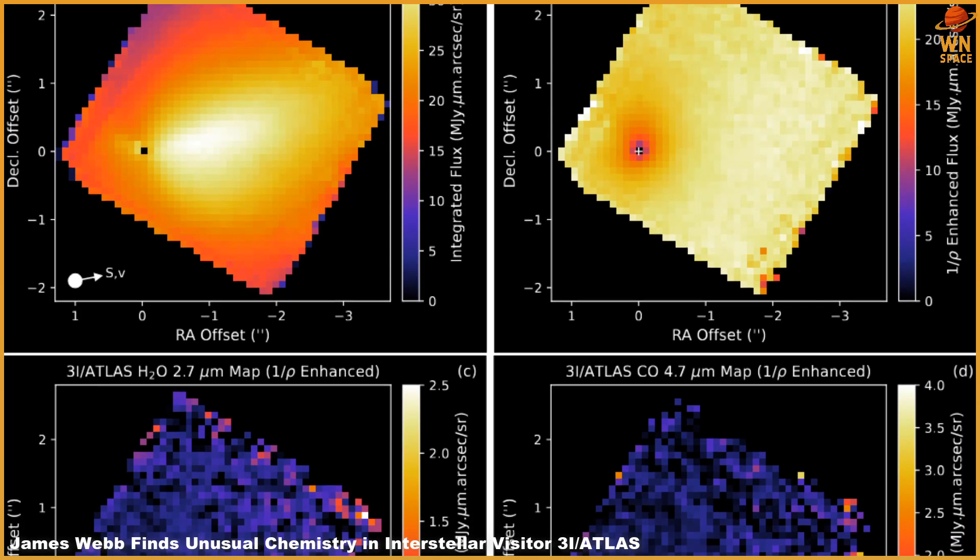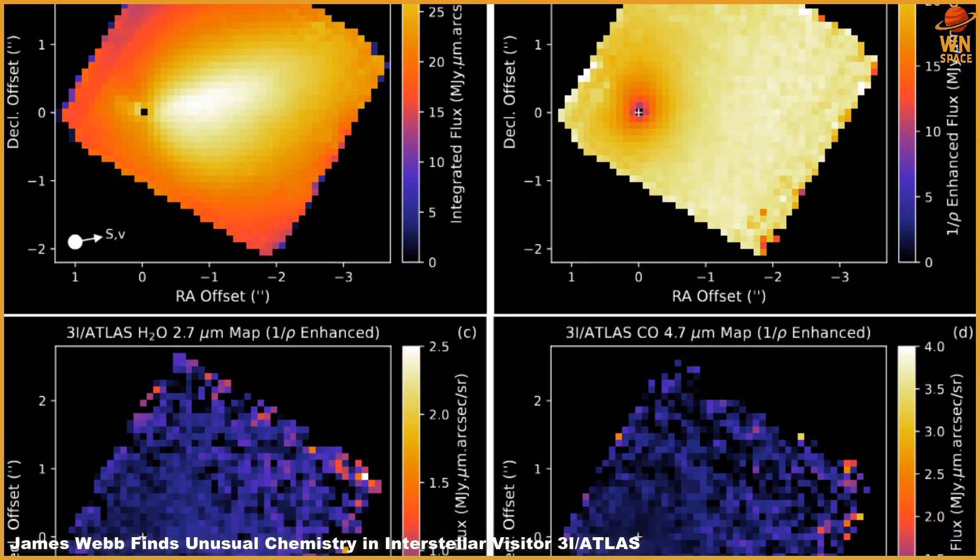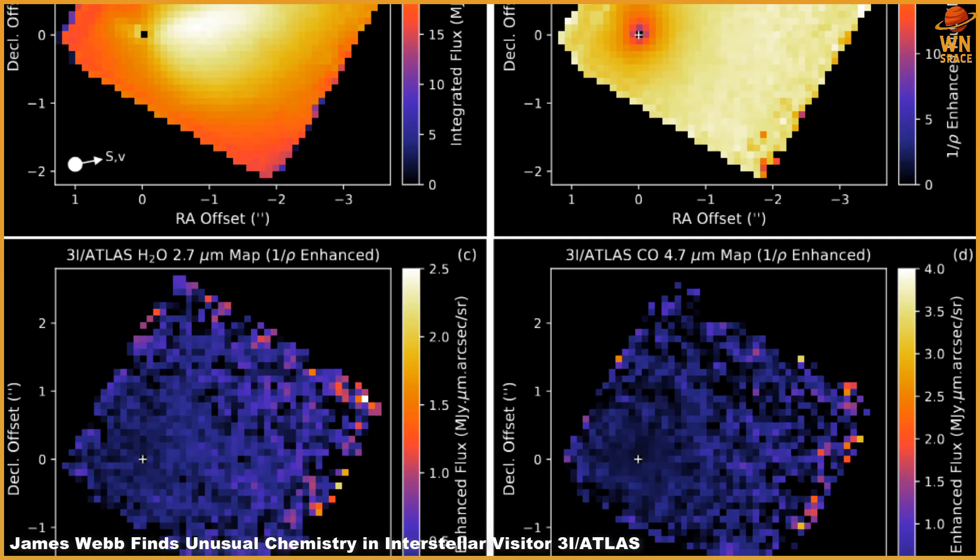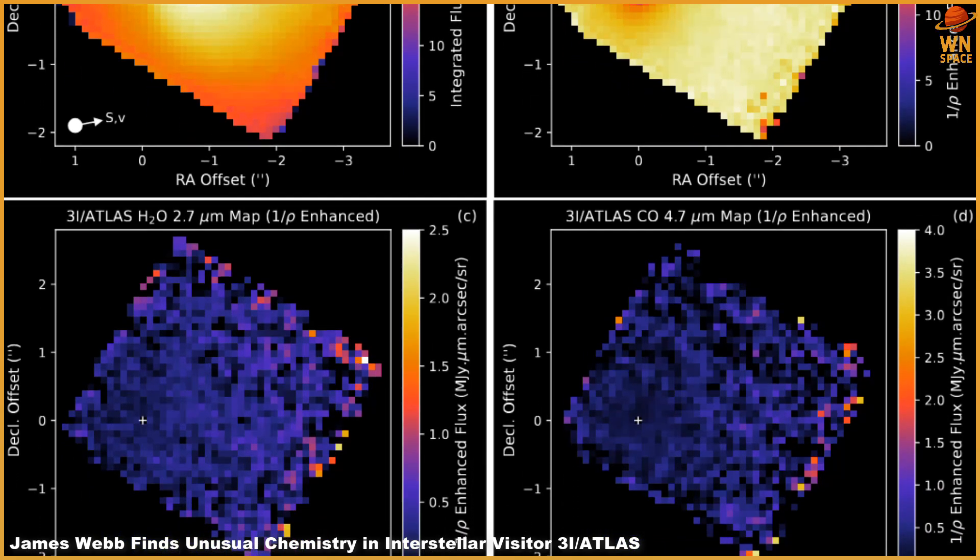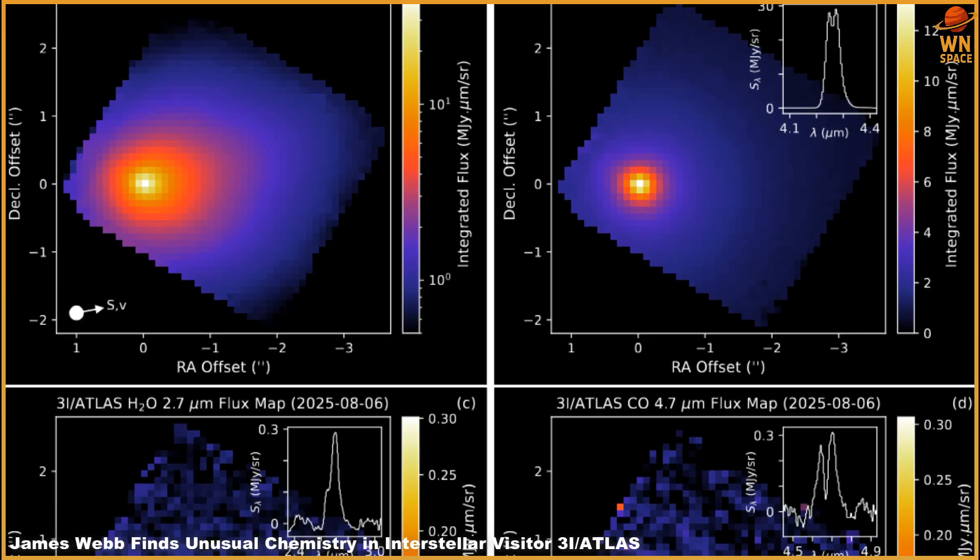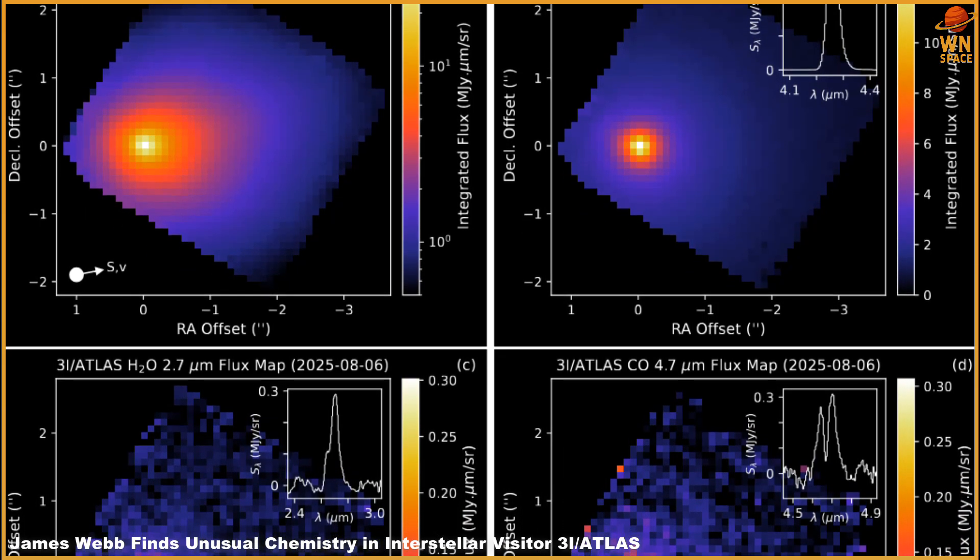Though its exact size is still uncertain, estimates suggest the core could be as small as 300 meters, or as large as 5.6 kilometers across. What's clear is that it is actively releasing gas and dust, even though it was still far from the sun when Hubble first observed it.